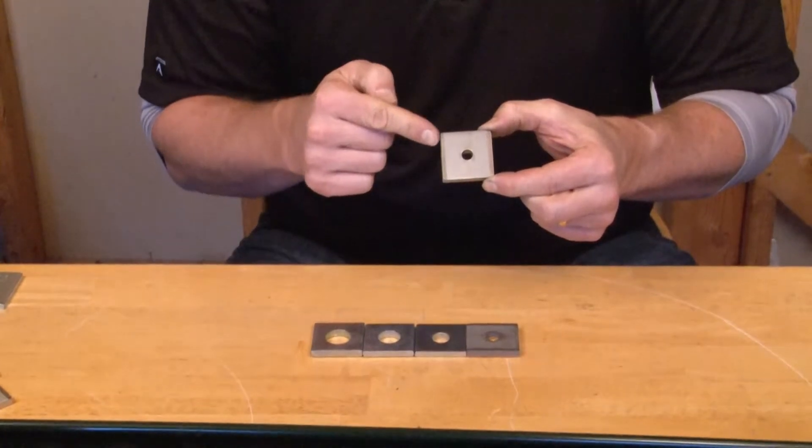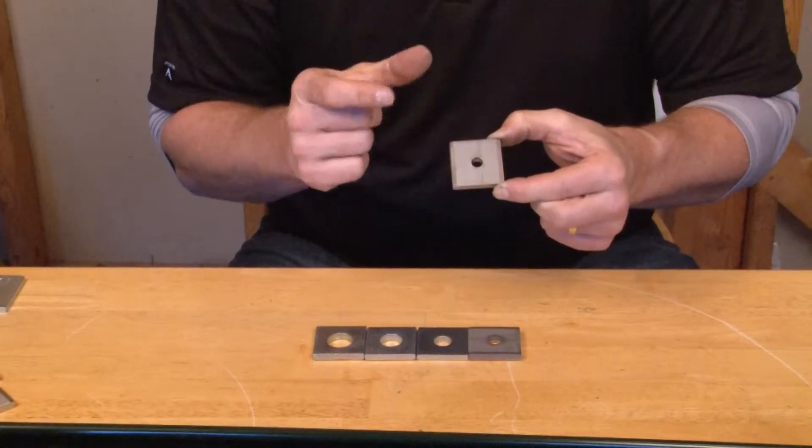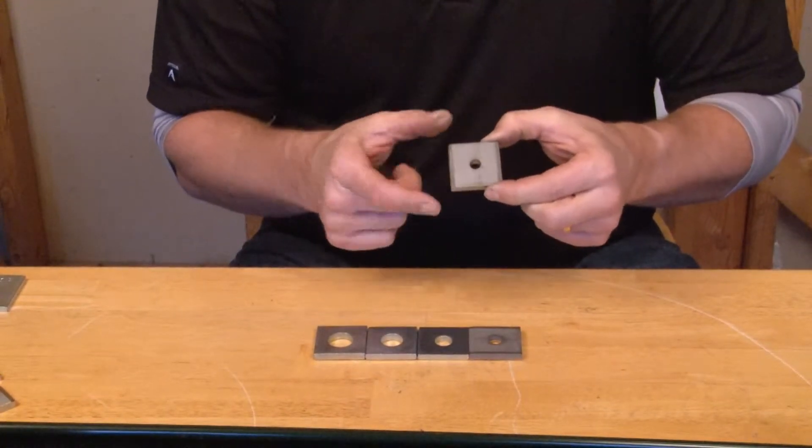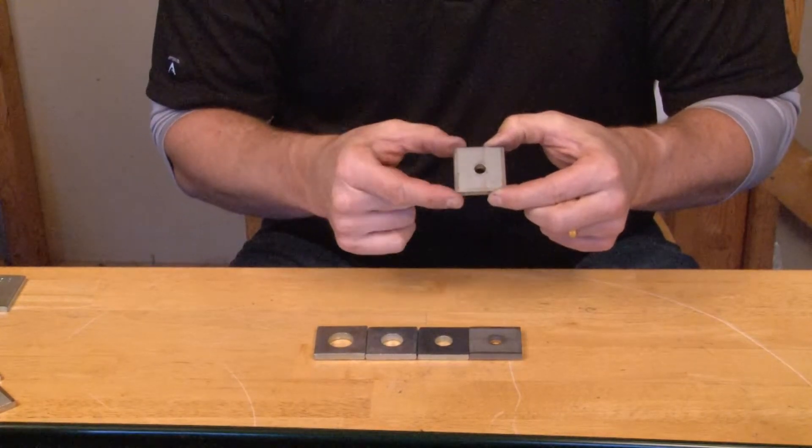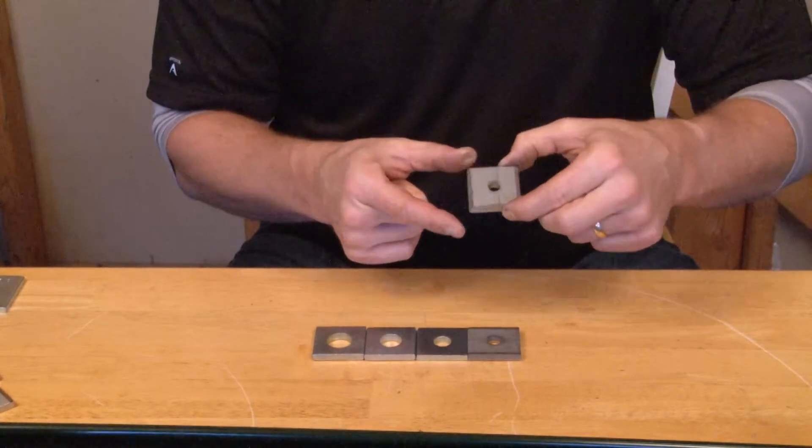Each of them is 1 and 5 eighths inches in diameter to fit standard strut. This particular model has a hole for quarter inch rod. That's part number SW quarter SS for stainless steel.